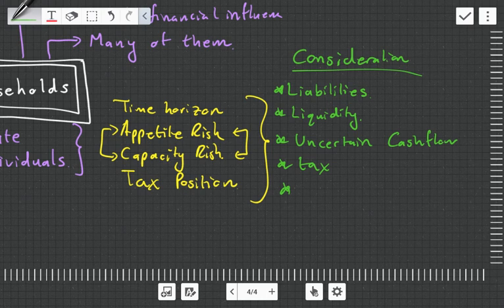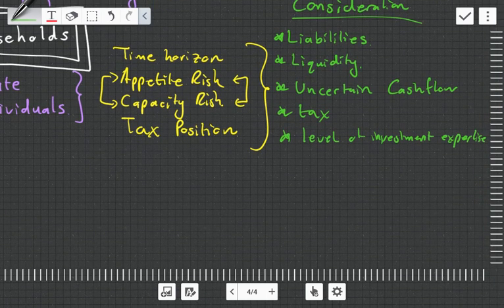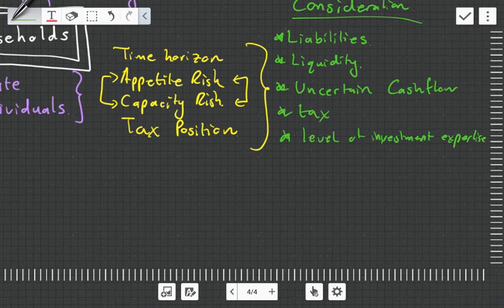Also, uncertainty around future cash flows. This could very much go down to what type of job they have. Do you have a very stable job where you're going in 9 to 5, getting a nice salary at the end of every month? Or are you more of a consultant or entrepreneur who gets a lot of money one month, no money the next month, with cash flows that are more uncertain?